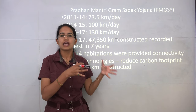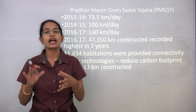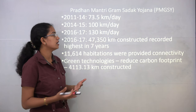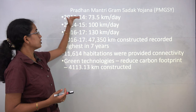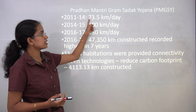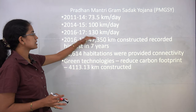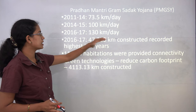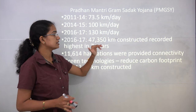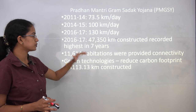Pradhan Mantri Gram Sadak Yojana addresses rural connectivity. Good agricultural produce must be transported to urban areas and for exports. Between 2011 and 2014, nearly 73.5 kilometers per day of road network was being built; this has increased to 130 kilometers per day in recent years.